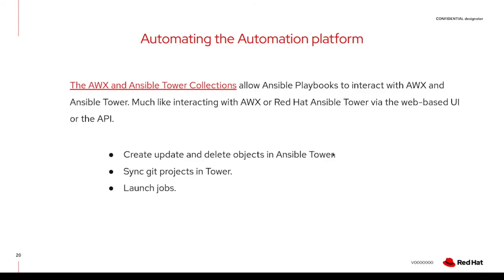We need to create objects in Tower, update projects, and launch jobs to test — and the way I'm going to do this is using Ansible. I don't want to break out into another language to consume Ansible Tower via the UI or API. There are already Ansible modules available — there's an AWX and an Ansible Tower collection that provide the ability to interact with Tower exactly as you would via the UI or API. I can write a playbook to talk to Ansible Tower, create objects, create jobs, launch jobs, and test my playbooks. The awx.awx collection is the community one; ansible.tower is the supported, certified collection for Red Hat customers.